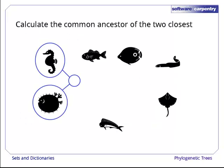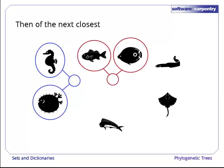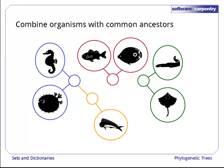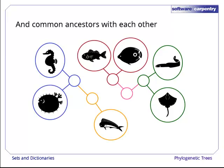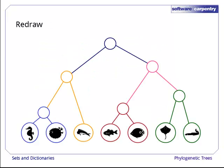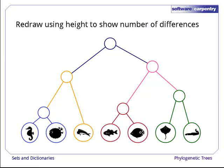The first step is to find the two species that are the most similar and construct their plausible common ancestor. We then pair two more, and two more, and start joining pairs to individuals, or pairs with other pairs. Eventually, all the organisms are connected. We can redraw those connections as a tree, using the heights of branches to show the number of differences between the species we're joining up.